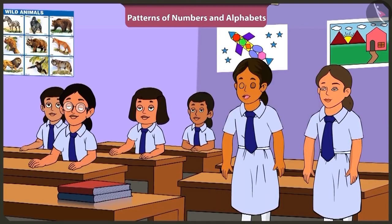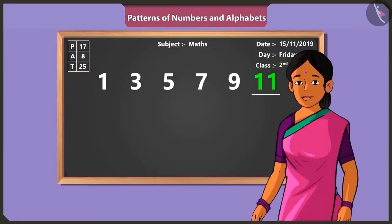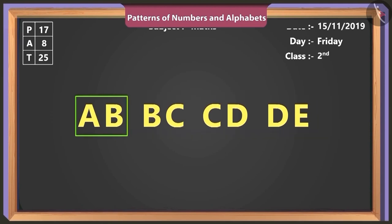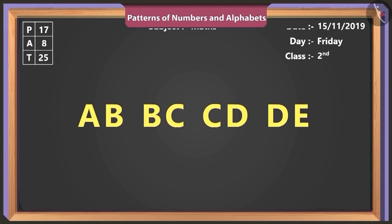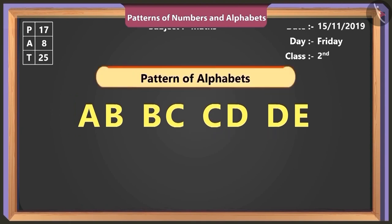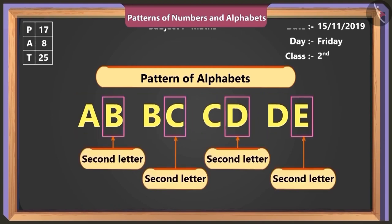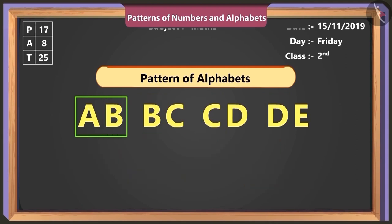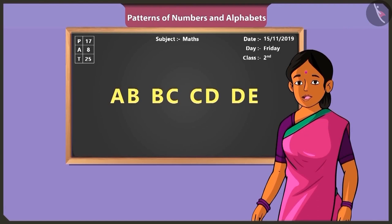Ma'am, we want to know more about patterns. A, B, B, C, C, D, D, E. Here, each term is of two alphabets. The second alphabet of the first term becomes the first alphabet of the second term, and the pattern is getting built further. Very good, Binny.